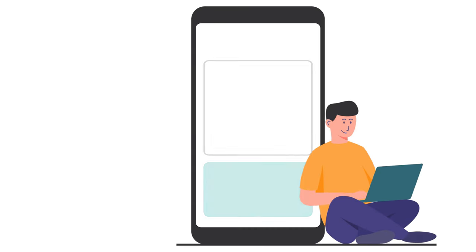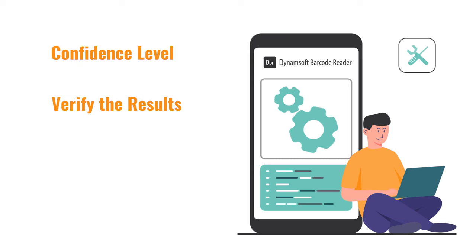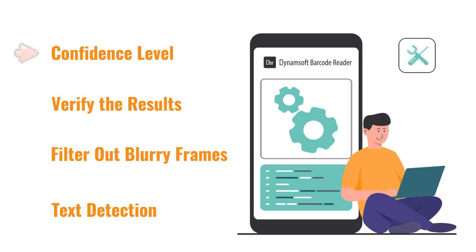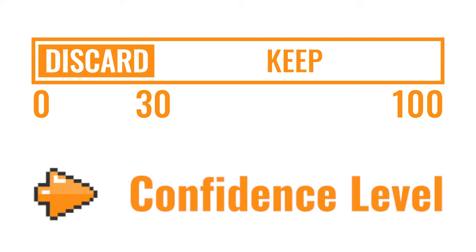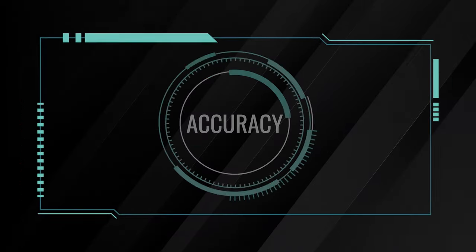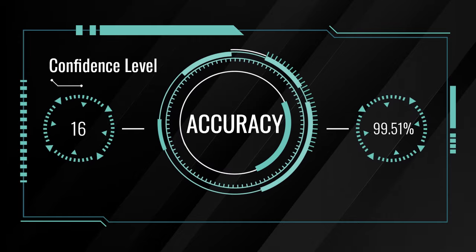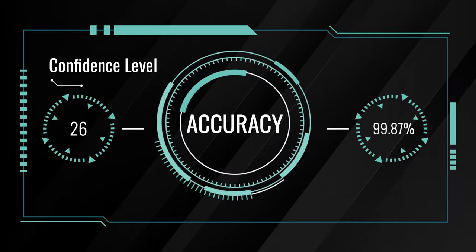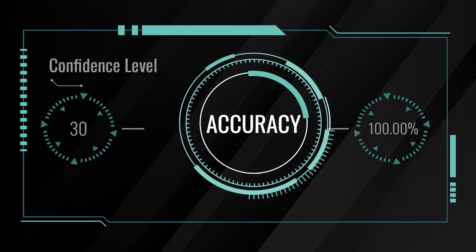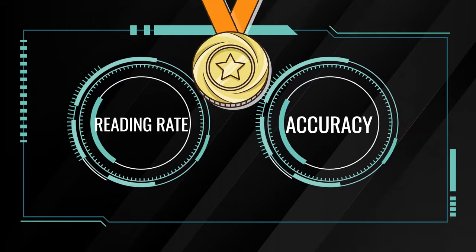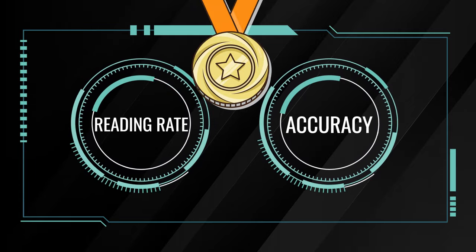Dynamsoft Barcode Reader is a robust and reliable barcode SDK that offers developers several options to improve accuracy. For example, the confidence level determines whether the results should be kept or discarded. For general purpose, the value of confidence level could be set to 30 out of 100. This means results are automatically discarded when the confidence score is under 30. Thus, Dynamsoft Barcode Reader became the most accurate SDK in terms of both reading rate and accuracy.